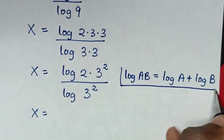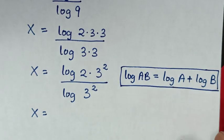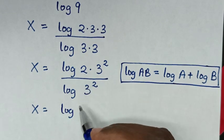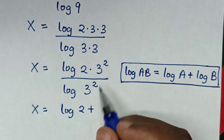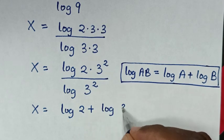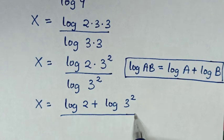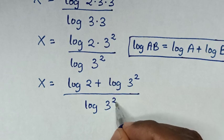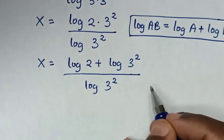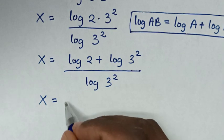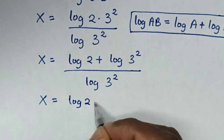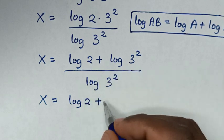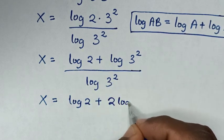So we'll apply this logarithmic rule. Then it will be x is equal to log of 2, plus this power of 2 will move to the front, so it will be 2 log of 3.